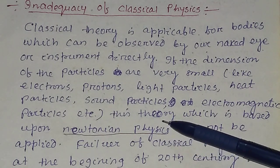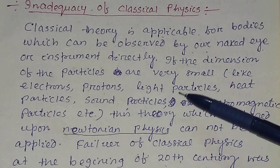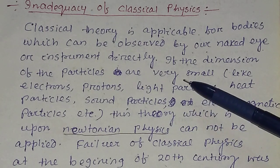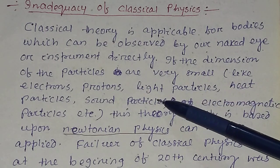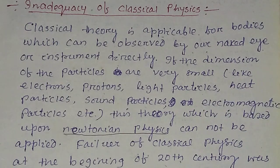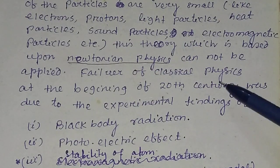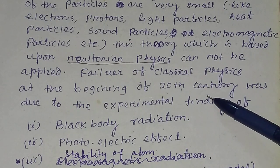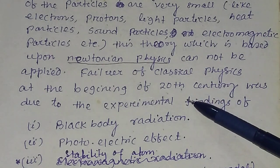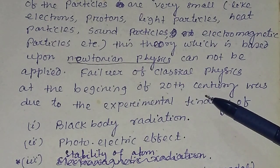So Newtonian physics cannot be applied to very small particles like electrons, protons, etc. The failure of classical physics actually started at the beginning of the 20th century.